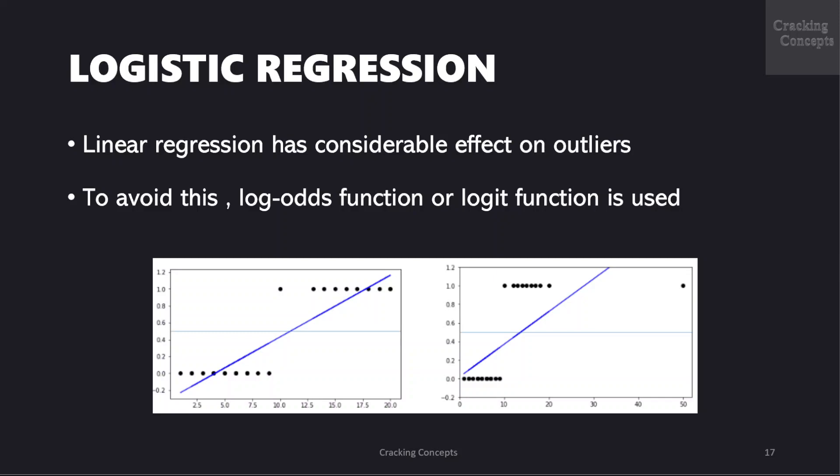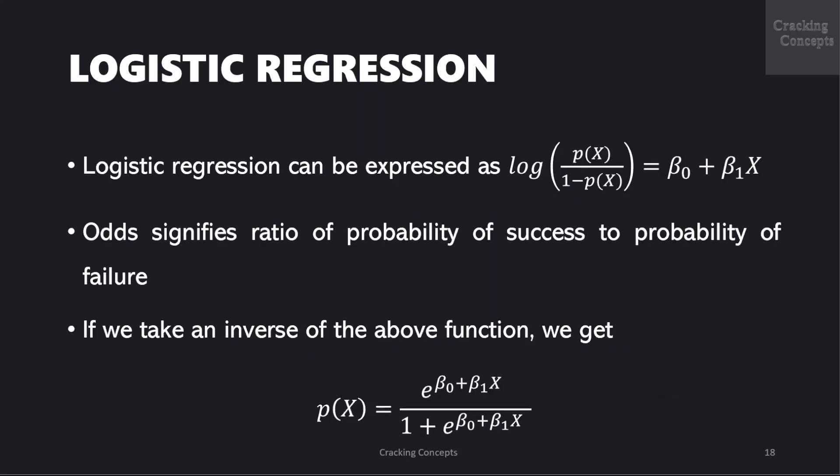In order to avoid this problem, log odds function or logit function is used in this case. Logistic regression can be expressed as log of p of x by 1 minus p of x which is equal to beta 0 plus beta 1x where the left hand side is called the logit or log odds function and p of x by 1 minus p of x is called odds. The odds signify the ratio of probability of success to the probability of failure.